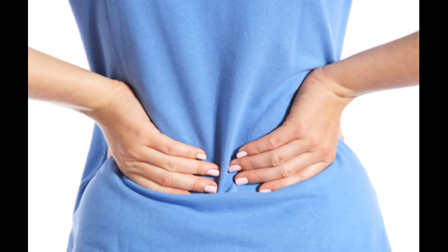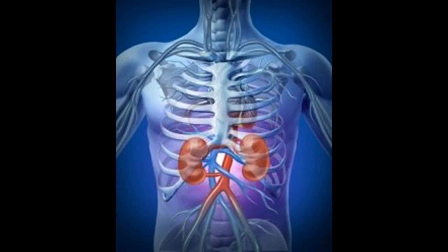Rarely, patients with hypercalciuria are given the medicine sodium cellulose phosphate, which binds calcium in the intestines and prevents it from leaking into the urine. If cystine stones cannot be controlled by drinking more fluids, a doctor may prescribe medicines such as Tiopronin and Cuprimine, which help reduce the amount of cysteine in the urine. For struvite stones that have been totally removed, the first line of prevention is to keep the urine free of bacteria that can cause infection, and a patient's urine will be tested regularly to ensure no bacteria are present. If struvite stones cannot be removed, a doctor may prescribe a medicine called acetohydroxamic acid (AHA), used with long-term antibiotic medicines to prevent the infection that leads to stone growth.